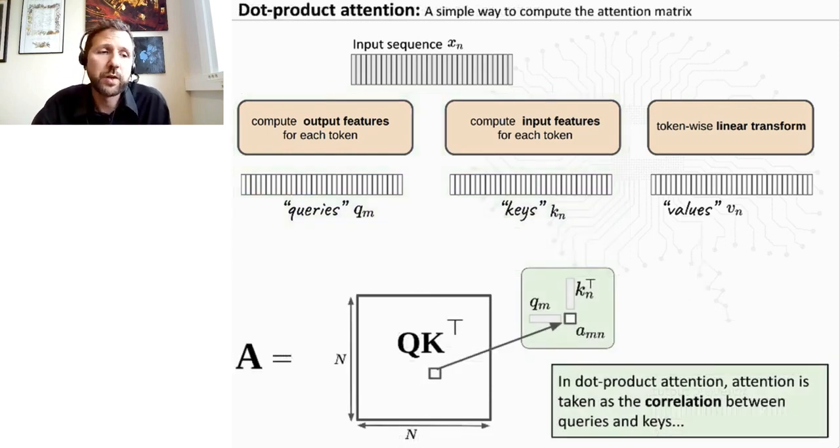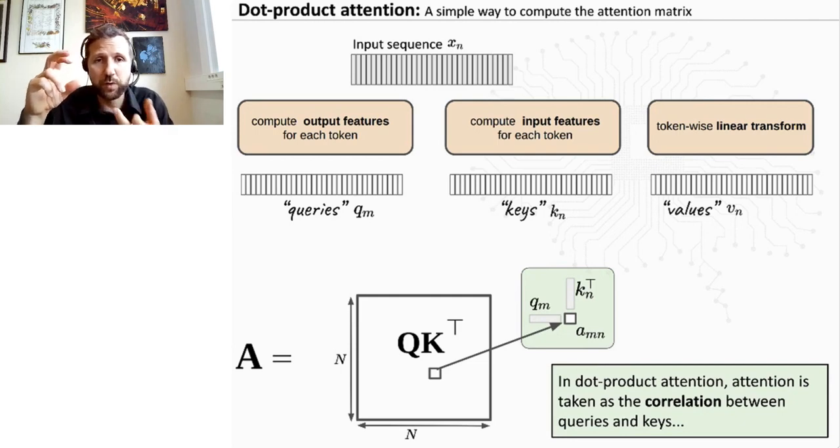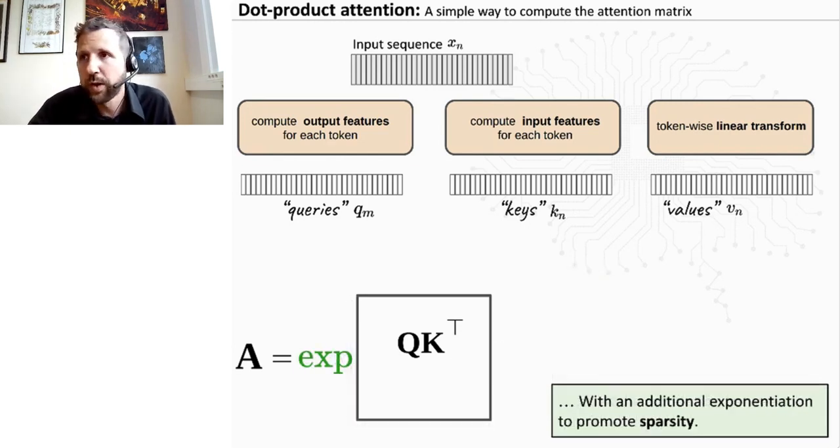So how do we compare queries and keys? Basically, we do it very simply through computing a correlation that's called dot product attention. So each entry of the attention matrix is obtained as a correlation of the corresponding query and key. Then we have some additional exponentiation just to promote sparsity. And that's it.